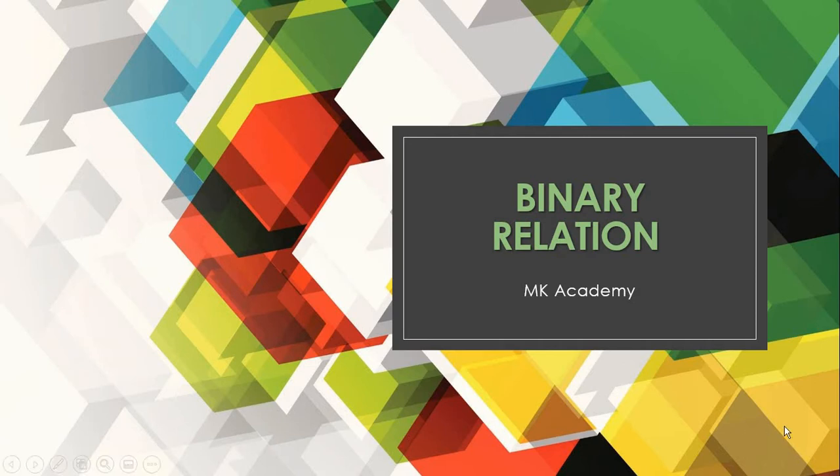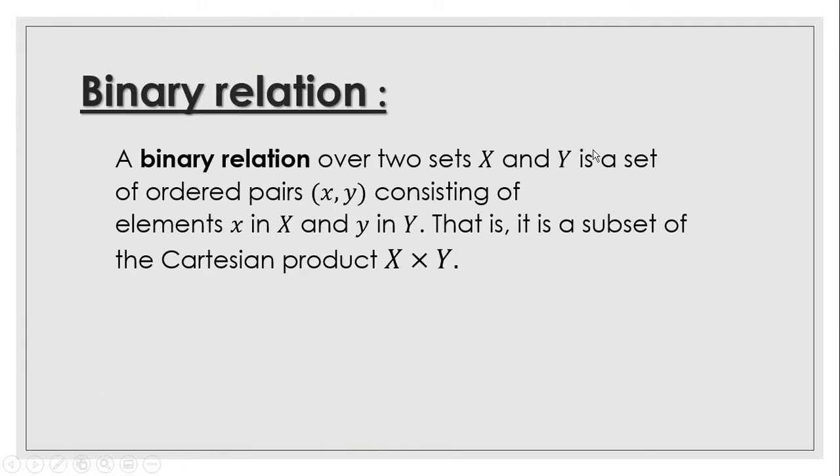If we have two sets X and Y, then the binary relation is basically the subset of Cartesian product X cross Y. Binary relation over X and Y is a set of ordered pairs (x, y) where x belongs to set X and y belongs to set Y.